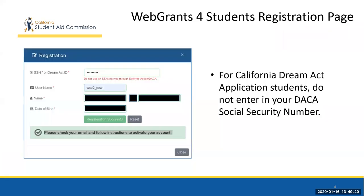In order to gain access to Web Grants for Students, the student must register for an account. For FAFSA filers, students will need their social security number, their full legal name, and their date of birth as it's shown on the FAFSA to create a username. For California Dream Act applicants, students will need their Dream Act ID number, their full legal name, and their date of birth as it's shown on the California Dream Act application.